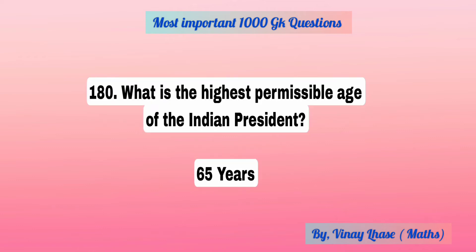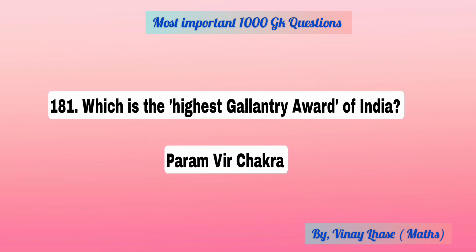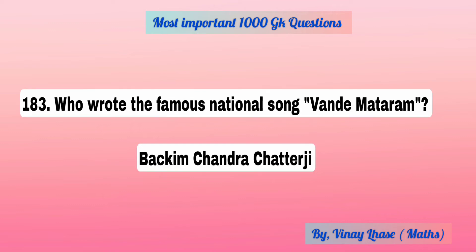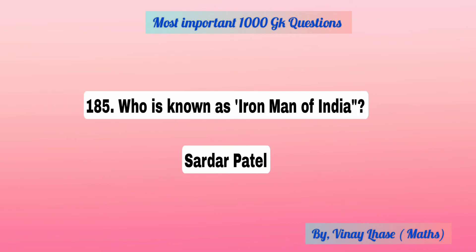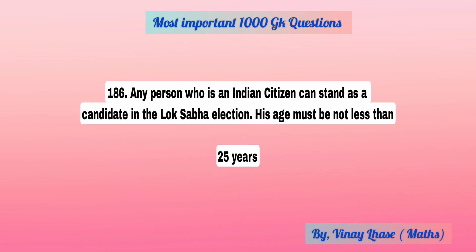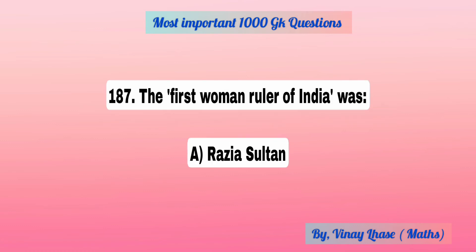What is the highest permissible age of the Indian president? 65 years. The highest gallantry award of India? Param Veer Chakra. Who wrote the famous national song Vande Mataram? Bankim Chandra Chatterjee. Brazil is the largest producer and exporter of coffee. Who is known as Iron Man of India? Sardar Patel. Minimum age for Lok Sabha? 25 years. The first woman ruler of India was Razia Sultan.